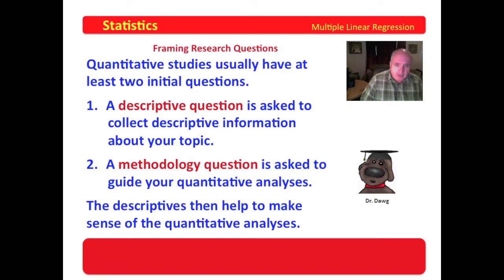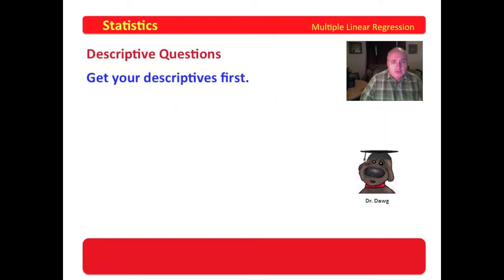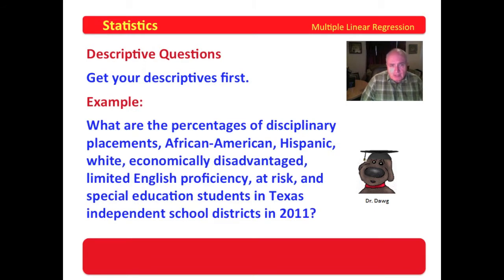The descriptives help you to make sense of the quantitative analysis. So you have a descriptive question, then a methodology question. Descriptive questions you get first. Here's an example: What are the percentages of disciplinary placements — African-American, Hispanic, white, economically disadvantaged, limited English proficiency, at risk, and special education students in the Texas independent school districts in 2011?